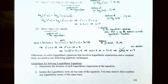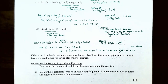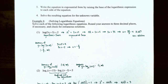When solving logarithmic equations involving a constant term, follow these guidelines: (1) Determine the domain of each logarithmic expression. (2) Isolate the logarithmic term on one side, combining logarithms of the same base using the product or quotient rule. (3) Convert to exponential form by raising the base to each side. (4) Solve the resulting equation for the unknown variable.